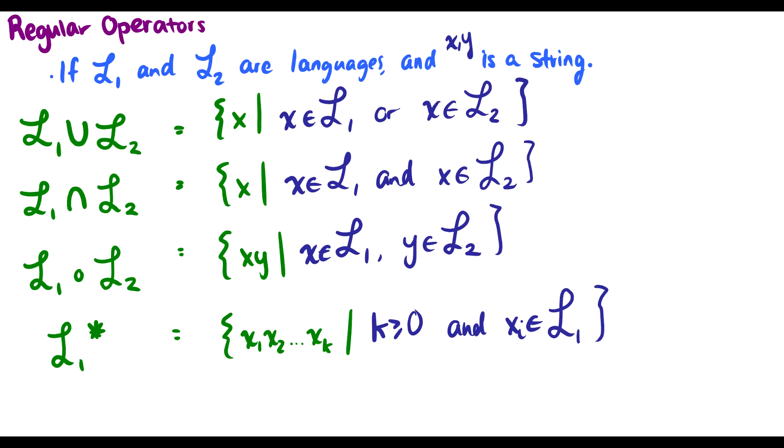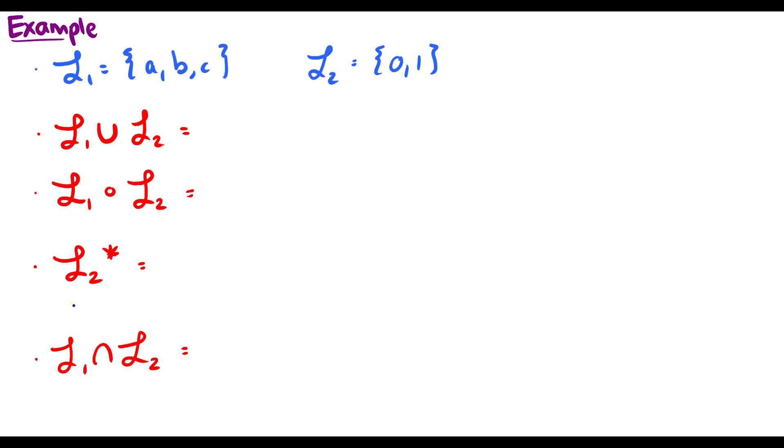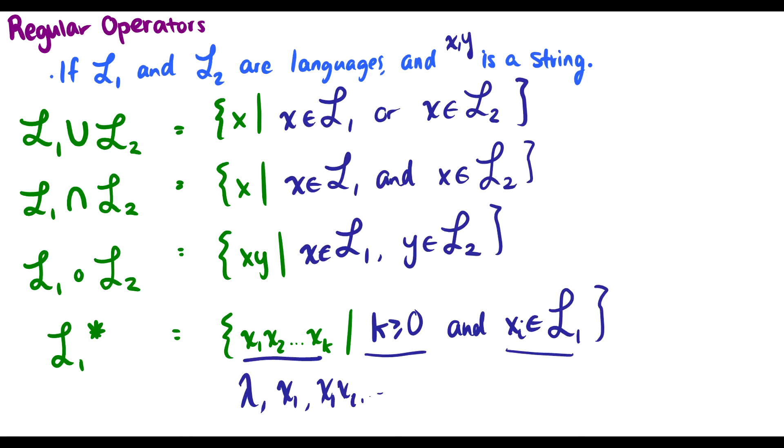So let's start with star first. So L1 star, X1, X2 all the way up to XK, where K is greater or equal to zero, and the string is in the language. So this could be the empty string, it could be the string X1, it could be the string X1, X2, so on and so forth. So when we start with L2 star here, well, L2 is going to be the language consisting of the zeros and ones. So it accepts zero and it accepts one. So L2 star, well, it could accept the empty string. So the star operator will always accept the empty string, since the definition says K has to be greater or equal to zero, which means the empty string is part of it.